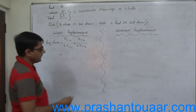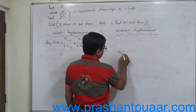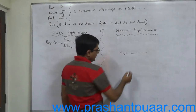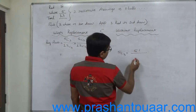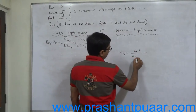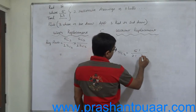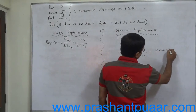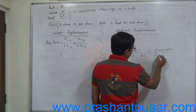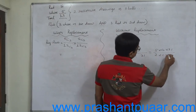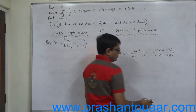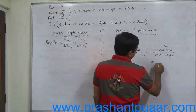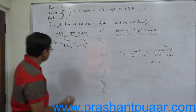What is 5C3? 5C3 is 5 factorial upon (5 minus 3) factorial into 3 factorial, which gives 5 into 4 into 3 factorial divided by 2 into 1 into 3 factorial. Cancelling 3 factorial, we get 5 into 4 divided by 2, so the answer is 10.